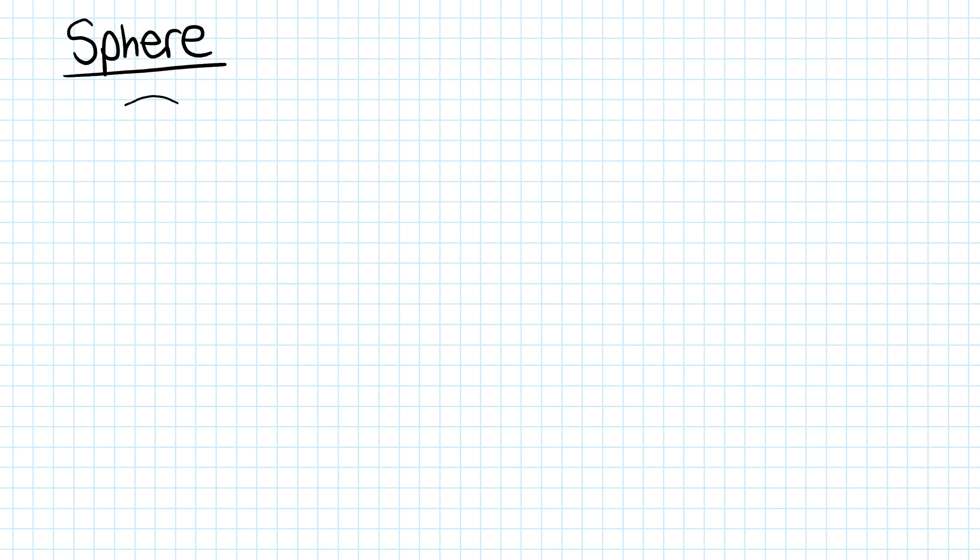A sphere is a shape like a football. You've still got a radius going from the center to the side. The formula for the surface area is 4πr², and the volume is 4/3πr³ for the sphere.